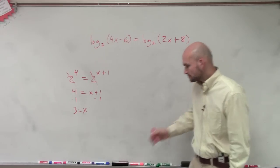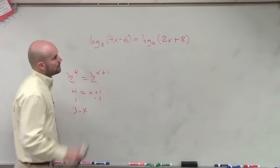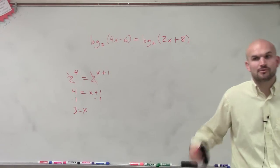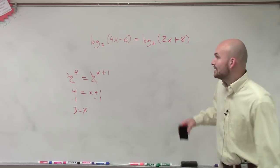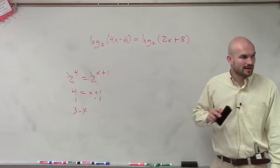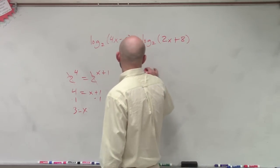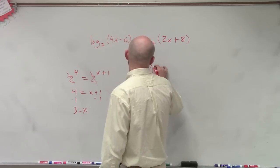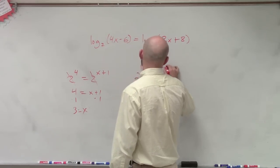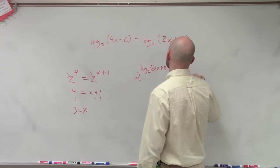Now, what we talked about when we had logarithms was that logarithm converted to exponential, right? Now, this might be one you probably wouldn't want to convert to exponential. If you convert this to exponential, you're going to have 2 raised to the log base 2 of 2x plus 8 equals 4x minus 6.